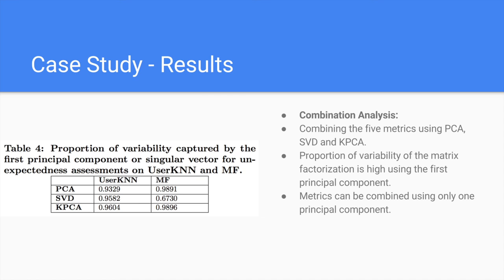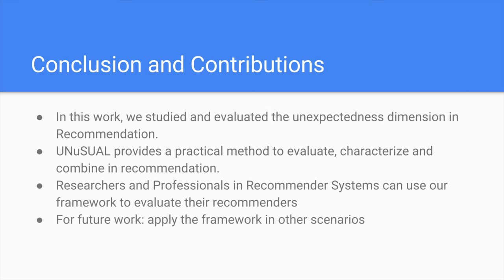In conclusion, this work has studied unexpectedness metrics in recommendation. We elaborated a framework and tool for evaluating unexpectedness in recommendation. Researchers and professionals in recommender systems can use our system for evaluating their recommenders with regard to unexpectedness. We hope it also stimulates other researchers to propose metrics for assessing unexpectedness in recommendation. As future work, we intend to apply this methodology in other scenarios and datasets. Moreover, this work has not attempted to explore recommenders that try to predict unexpected items — future work could explore recommendations of unexpected items. This was our work: a framework for unexpectedness evaluation in recommendation. Thank you very much for watching.